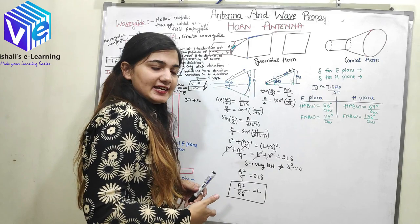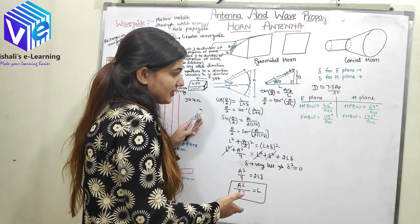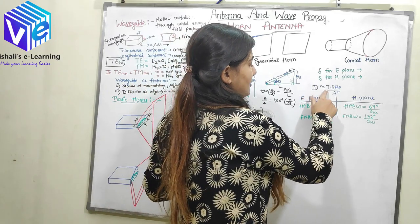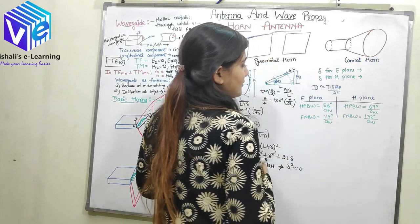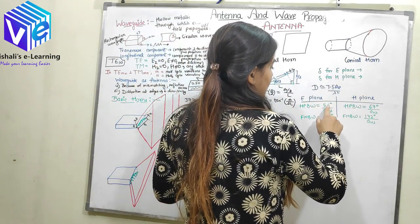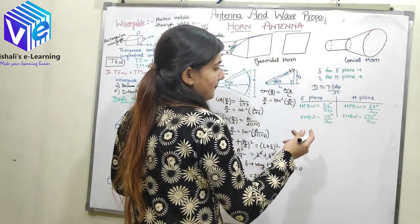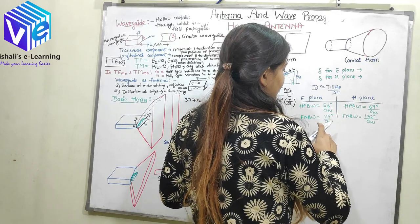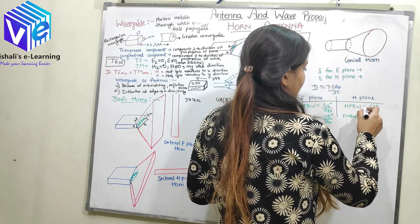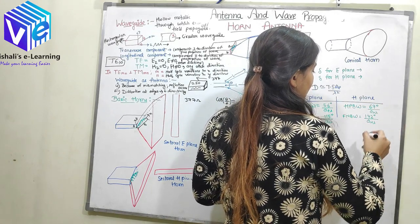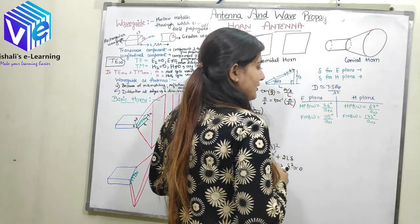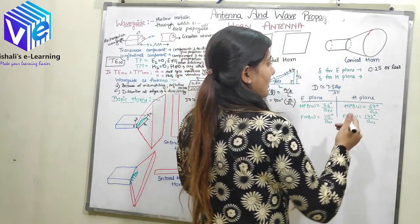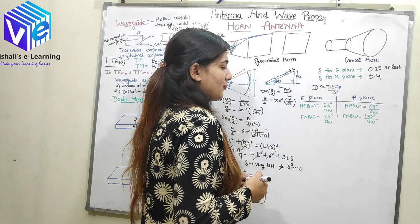Depending upon this relation, L = A²/(8δ) to design my horn antenna. We have various other design parameters: directivity is nearly equal to 7.5·Aₚ/λ². For E-plane horn, half power beam width is 56°/(Aₑ·λ), and first null beam width is 115°/(Aₑ·λ). For H-plane horn, half power beam width is 67°/(Aₕ·λ). The condition for delta for E-plane is 0.25 or less, and delta for H-plane should be nearly equal to 0.4.